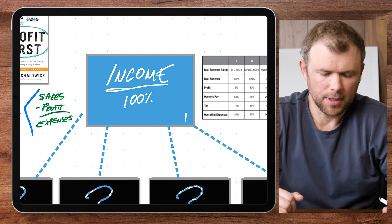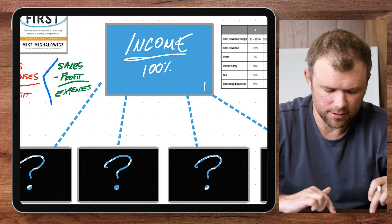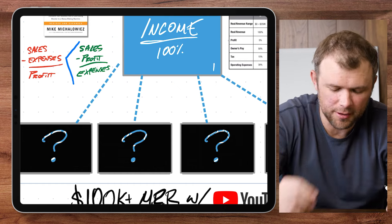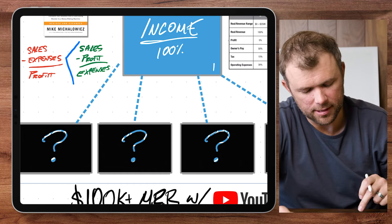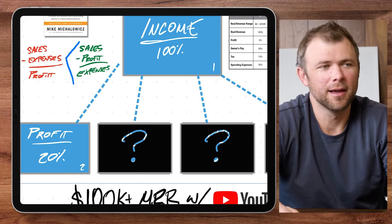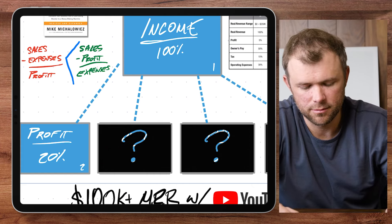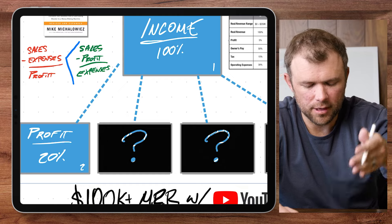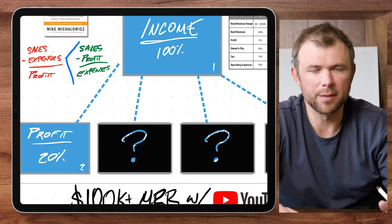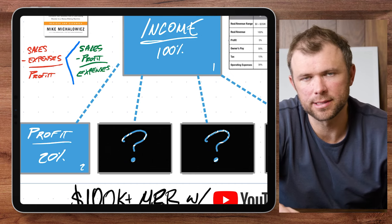Once all this money comes into this account, you have a flow to four other accounts. The first one being your profit account. Let's say you want to have a 20% profit margin. If you have $100,000 of income coming in for that month, drop 20% into your profit bucket — or whatever number that is.